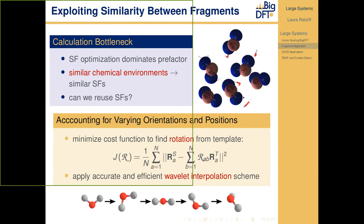The answer is yes, but there is one challenge: we don't have all molecules neatly aligned so we can just easily replicate support functions — we have to account for varying orientations. We have implemented an approach where we minimize a cost function — a well-known problem — where we have some rotation matrix between a template coordinate system and a target coordinate system of interest. By minimizing this function, we find the optimal rotation matrix. In the case of rigid molecules the cost function gives zero; if there is distortion, we have a non-zero value. Once the rotation is found, we apply an interpolation scheme based on wavelets to go between different orientations.